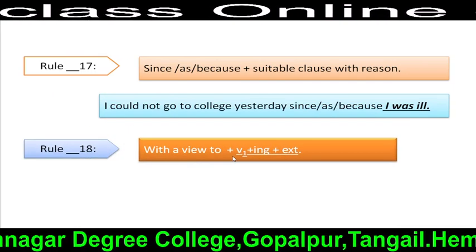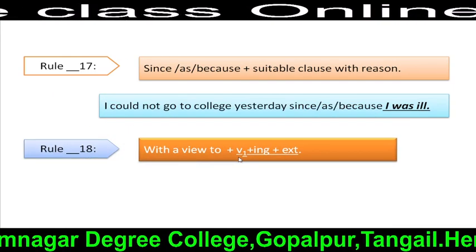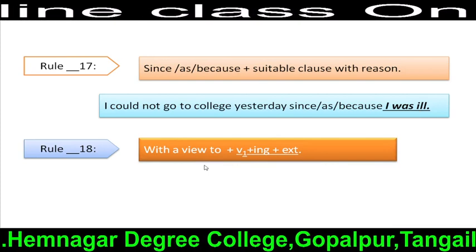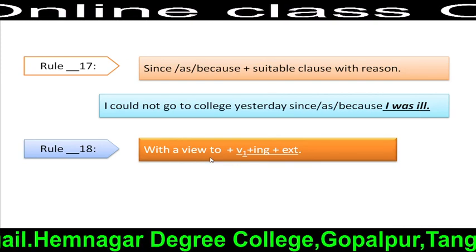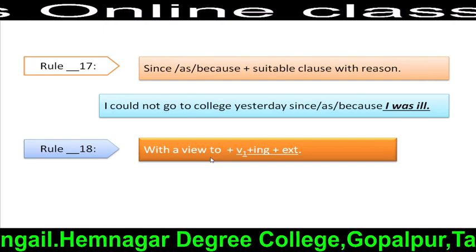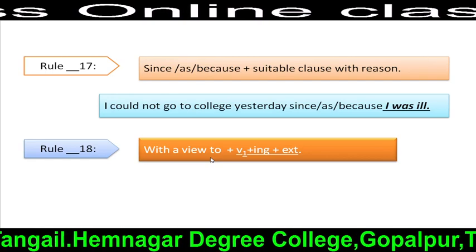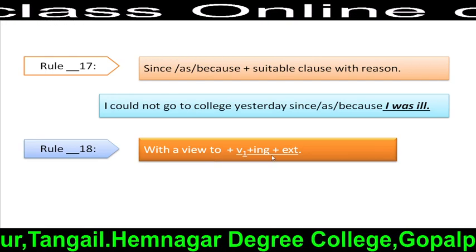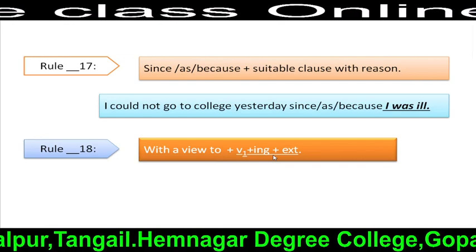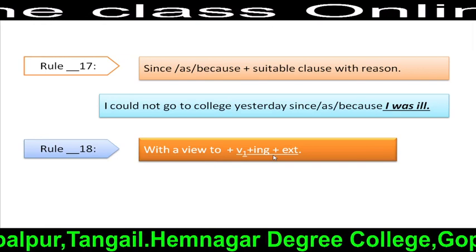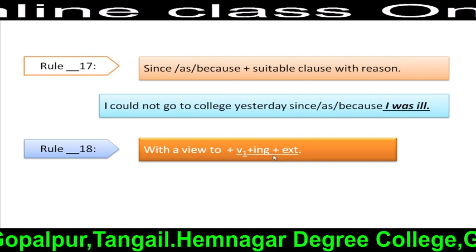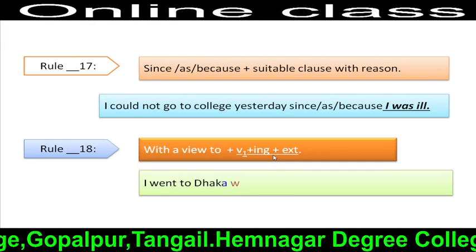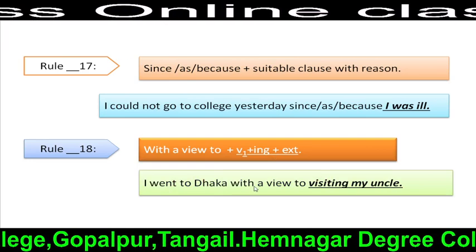Rule 18: With a view to + V-ing + extension. Here, 'with a view to' is a prepositional phrase, and we know that after a prepositional phrase we always use verb + ing + extension. For example: 'I went to Dhaka with a view to visiting my uncle.' Here, 'visiting my uncle' follows the V-ing + extension pattern.